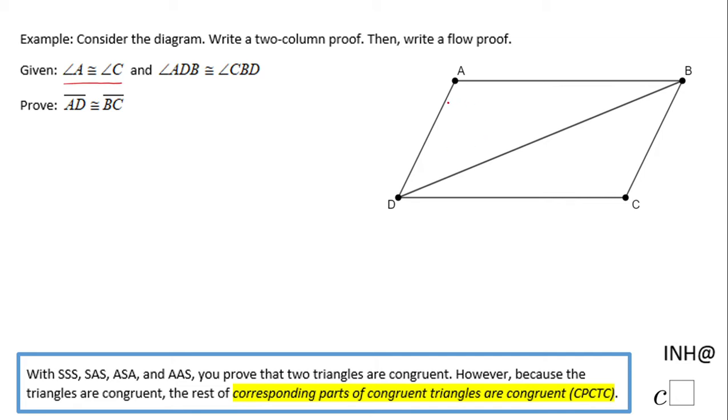I'm going to mark this in the diagram. Angle ADB, which is this angle ADB, is congruent to angle CBD. We need to prove that AD is congruent to BC. To prove that these two segments are congruent, we need first to prove that these two triangles, triangle ADC and triangle CBD, are congruent.